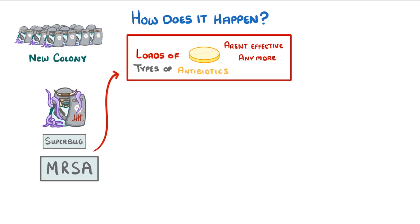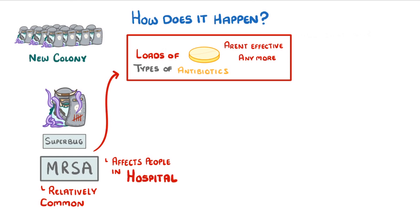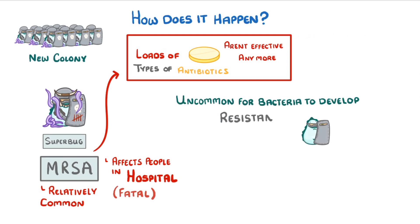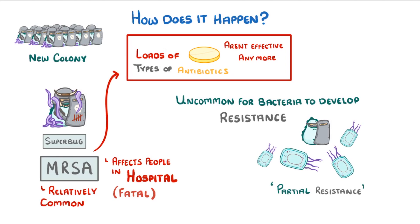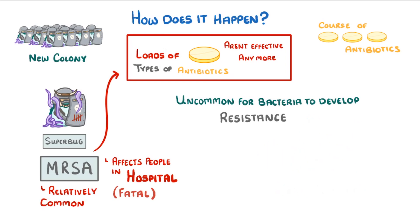Because its resistance makes it so hard to kill, MRSA is actually relatively common and often affects people in hospitals, where it can sometimes be fatal. Despite what we've just said, it's actually super uncommon for bacteria to develop resistance, and even when they do it's often only partial resistance. So by completing the course of antibiotics, we can generally still kill all of the bacteria — which is why it's so important to take antibiotics for the full length that you're told.